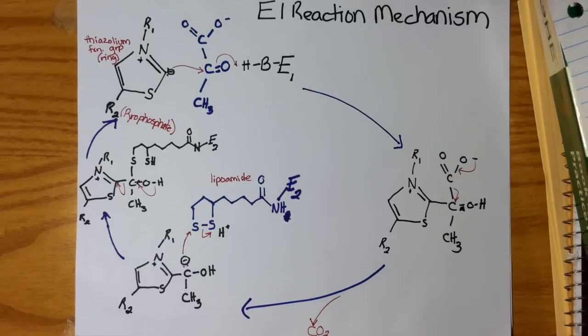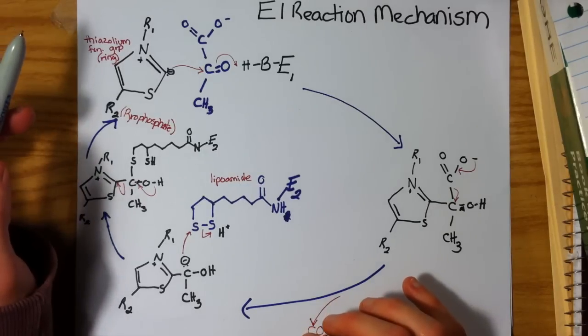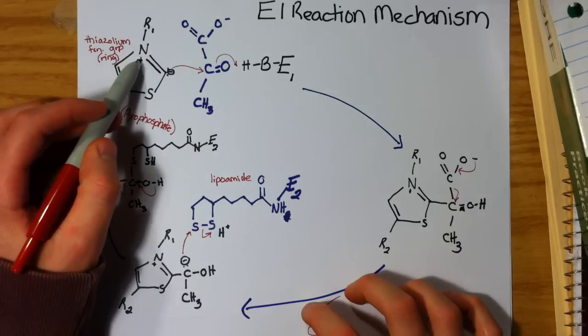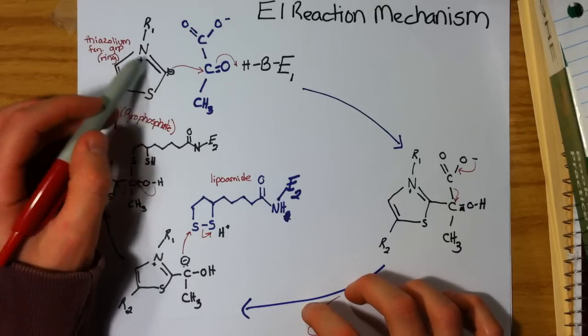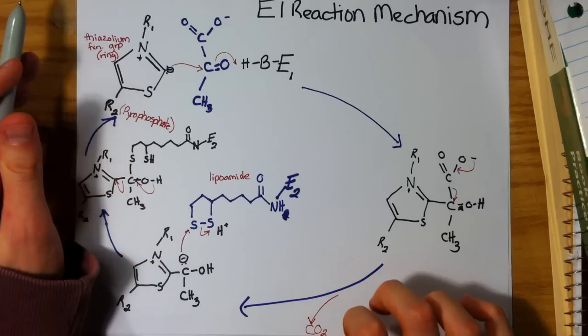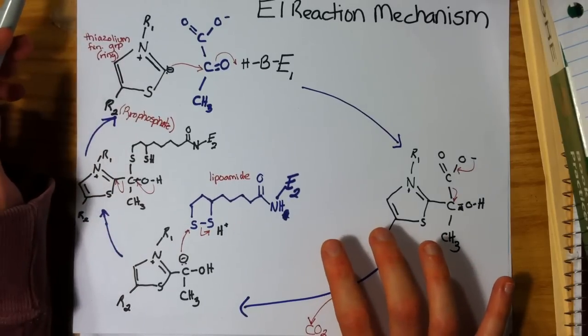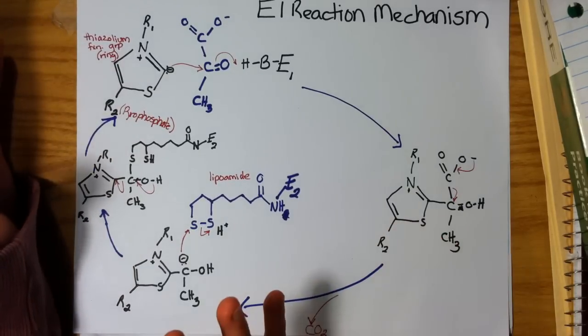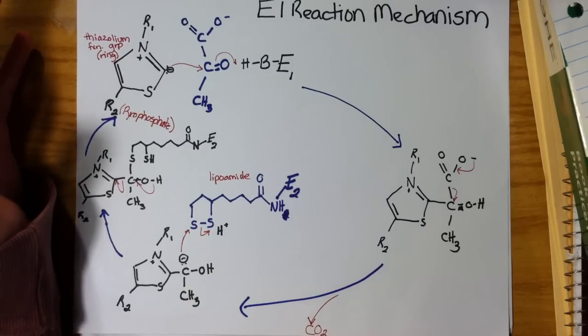During step 6, or reaction 6, we have this positively charged nitrogen, we have a conjugated ring here, and so it wants to absorb electron density. We call this an electron sink.